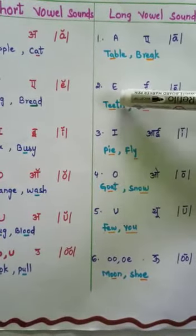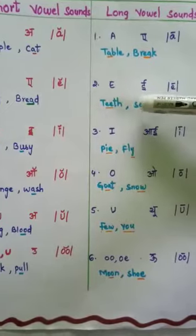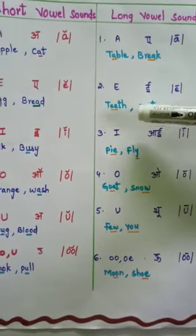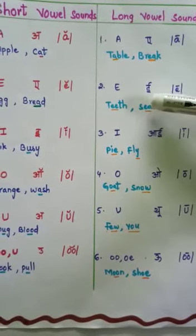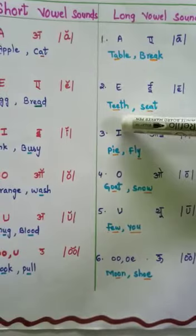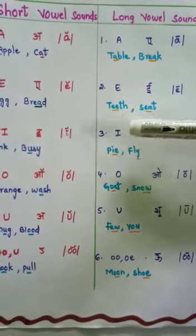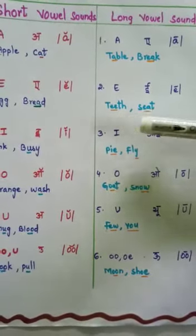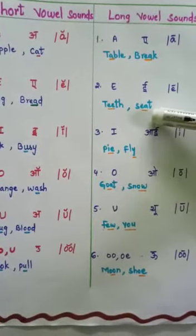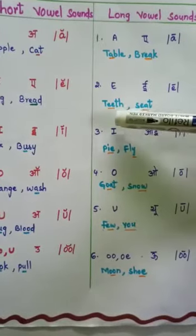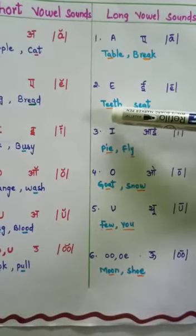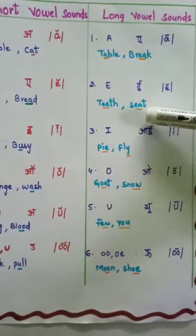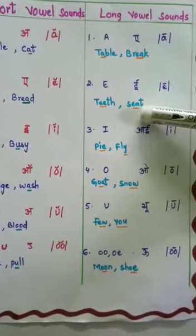Next comes E. E makes the sound /iː/ — the long vowel sound. Examples: teeth and seat. Teeth makes the /iː/ sound. Here is seat — also /iː/ sound.